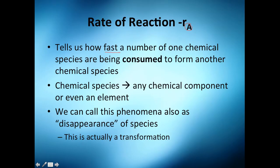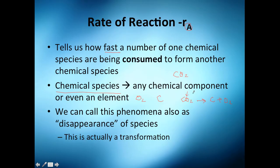A chemical species is any chemical component or even an element — for example CO₂, O₂, or even carbon. So if you find out that this one chemical species, let's call it A, is turning into B and C, we call this phenomenon the disappearance of this species.